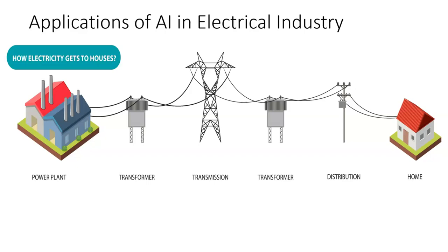A fault could happen anywhere in this chain. How will you monitor faults — will you monitor them only after they have happened as a post-facto exercise? Electricity companies and power utility companies are doing preventive maintenance — that is, once in a while you go and check transmission lines, you check transformers, you check distribution lines and associated activities. But are they sufficient?